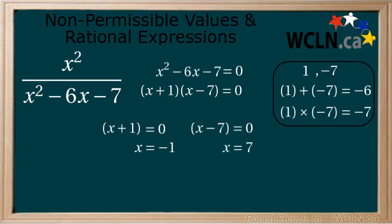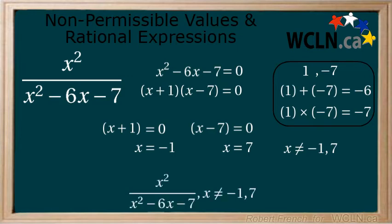Therefore, the non-permissible values of x are negative 1 and 7. We could write the whole expression with the non-permissible values like this: x squared over x squared minus 6x minus 7, where x cannot equal negative 1 or 7.